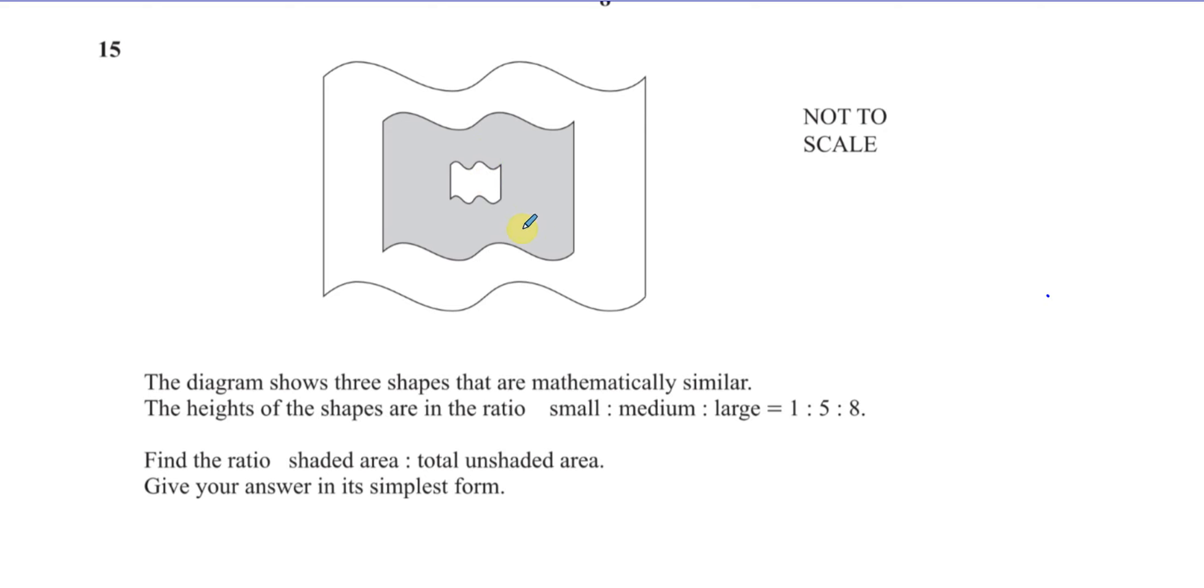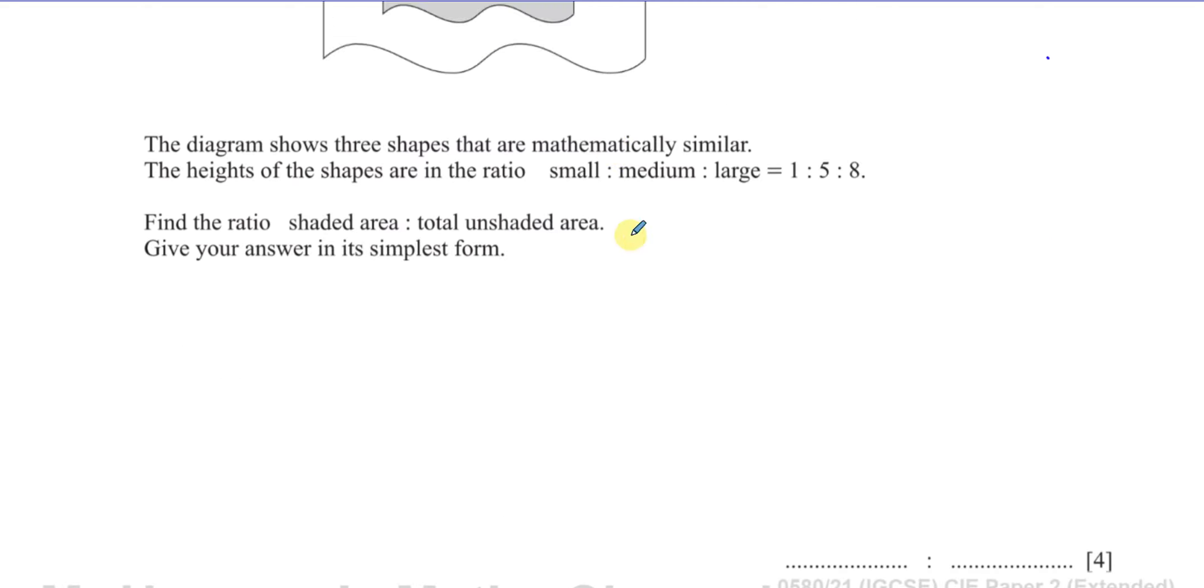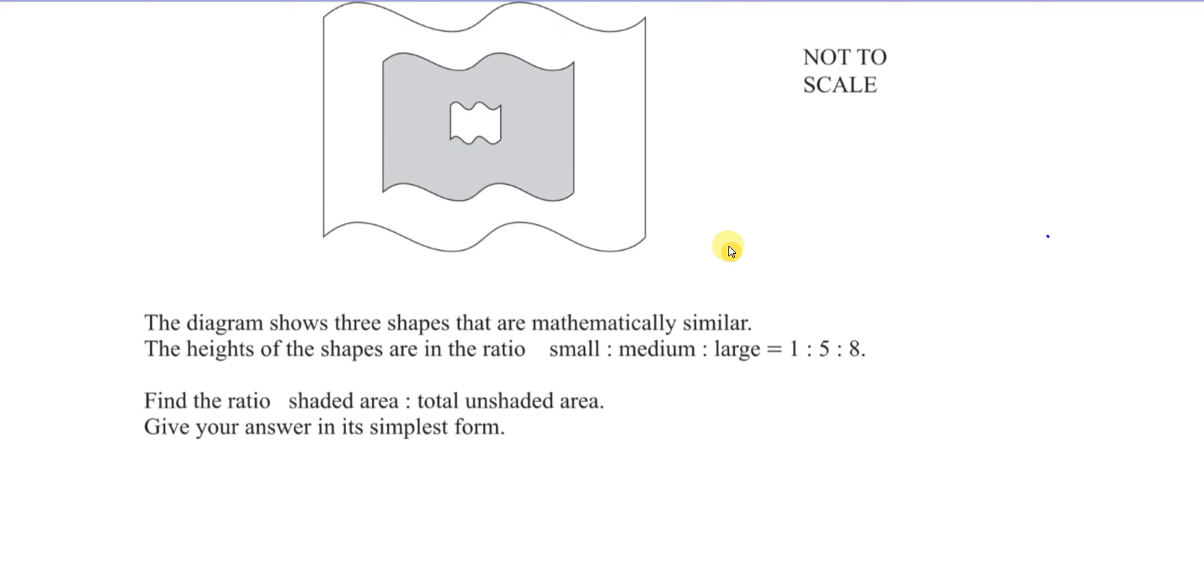Okay, so what we can do here is, first of all, we've got to think about the ratio of the areas. We're given the ratio of the lengths. So we're going to think about the ratio of the areas of these shapes.